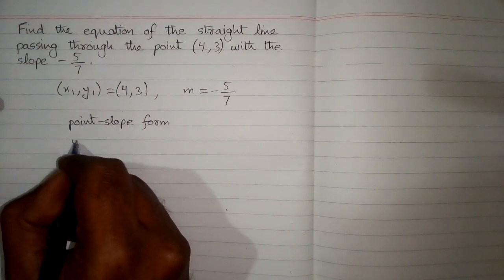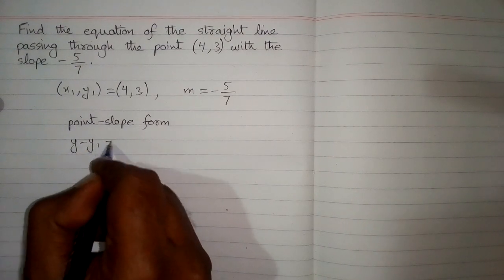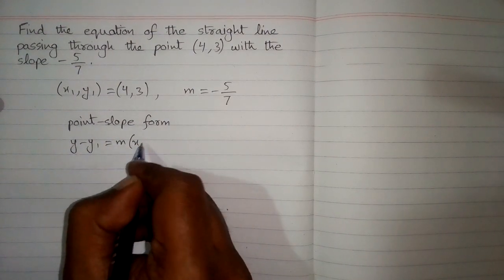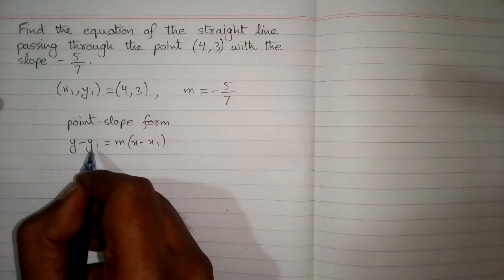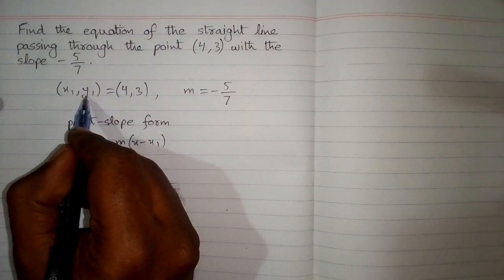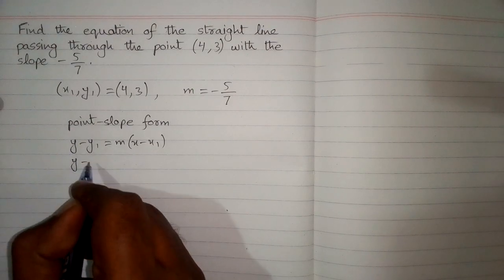equation of the straight line. The point-slope form is y - y1 = m(x - x1). We will put the value of y1; the value of y1 is 3, so y